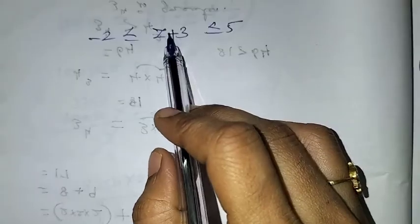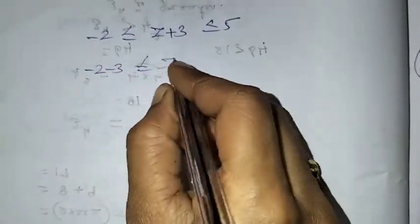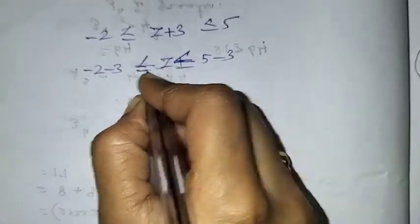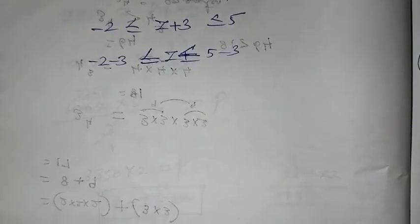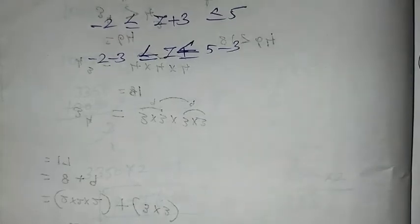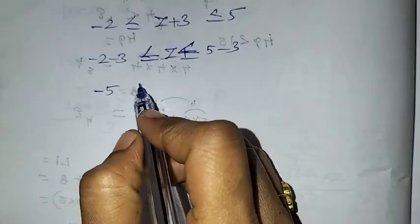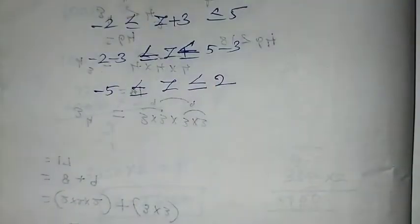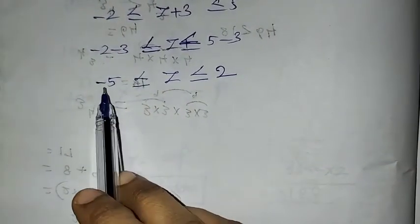Now we have the z value. We subtract 3 from all parts. Minus 2 minus 3 — same sign, add the same sign — less than or equal to z less than or equal to 5 minus 3.